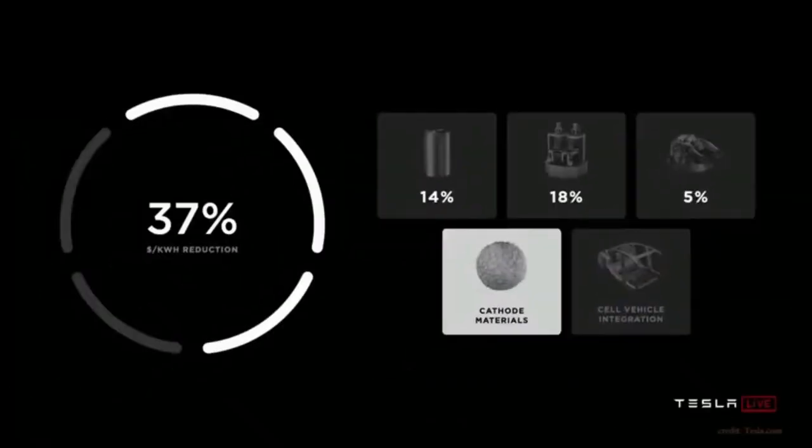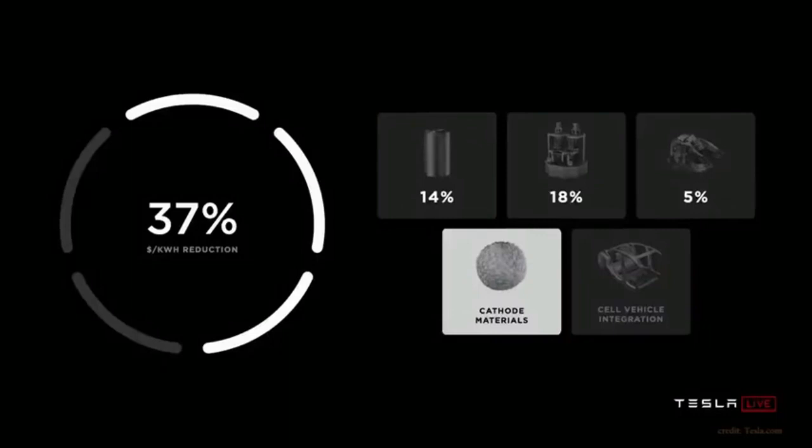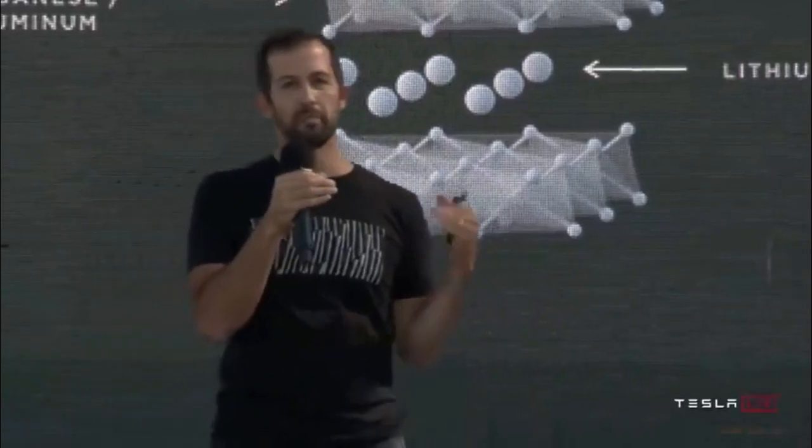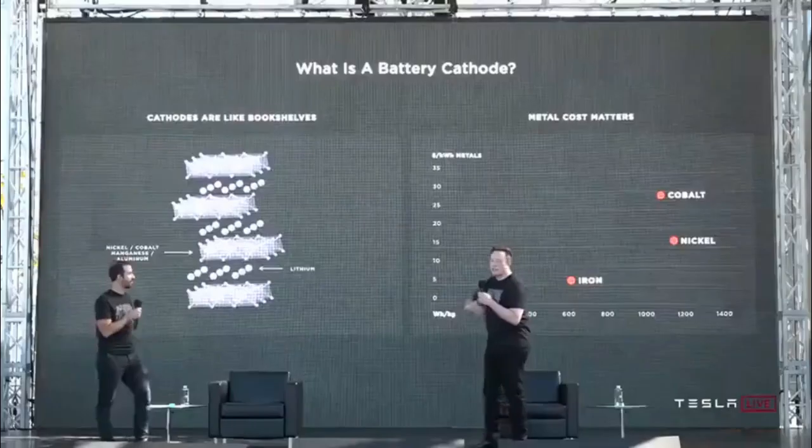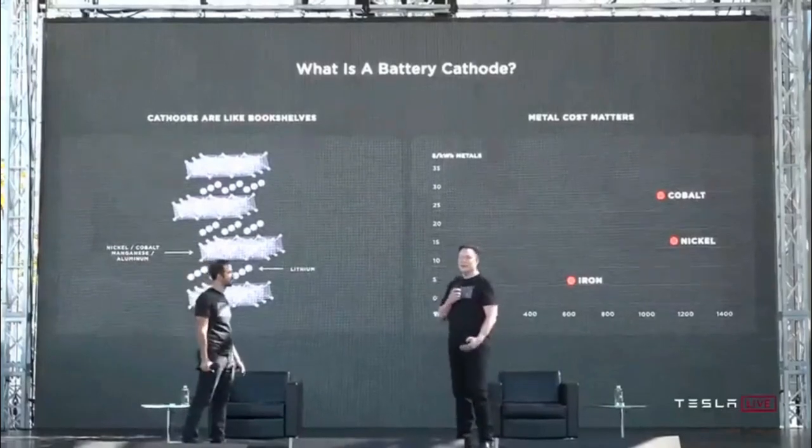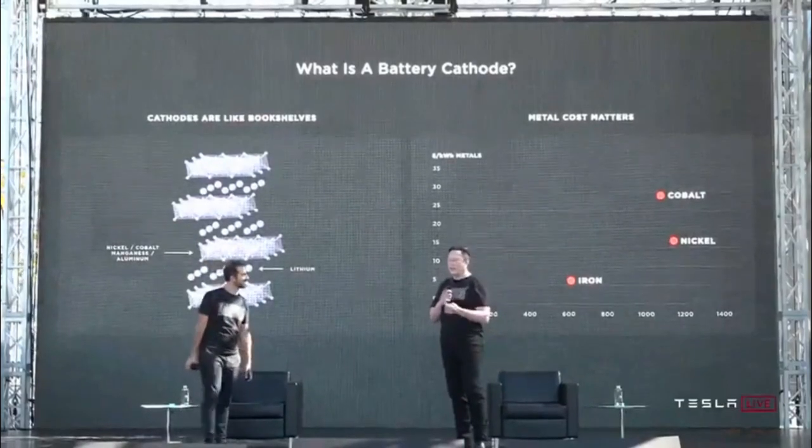In comparison, lead-acid batteries, a common alternative, offer a significantly lower energy density, ranging from 50 to 100 watt-hours per kilogram. The leap in energy density afforded by silicon-anode batteries opens up new possibilities for more efficient and powerful energy storage solutions.